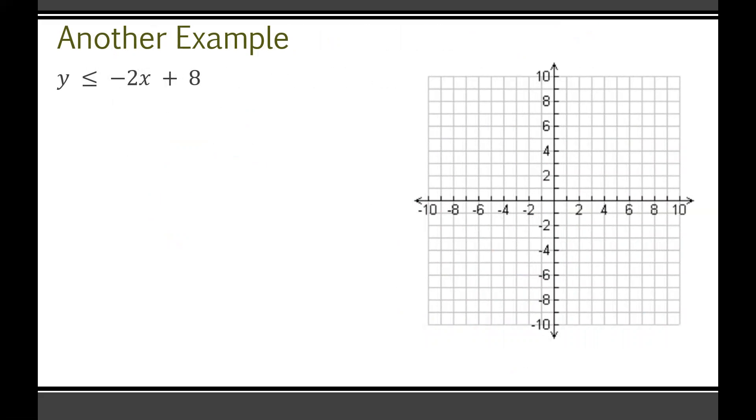We'll do another example here. If you feel confident that you can do this one on your own, by all means, give it a try. We have y is less than or equal to negative 2x plus 8. Just like before, this is a linear equation. We can just graph this like we graph any linear equation. Start with your y-intercept, which is your constant, so positive 8. And then look at your slope. It's negative 2. So that means when you go over 1, you have to go down 2. Just down 2 each time. No big deal. You can even go in reverse over here.